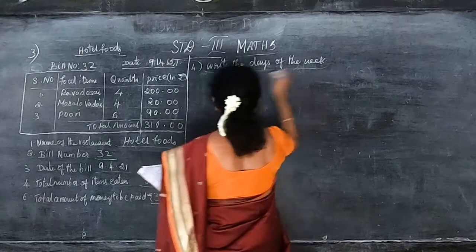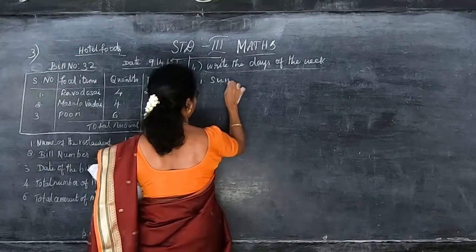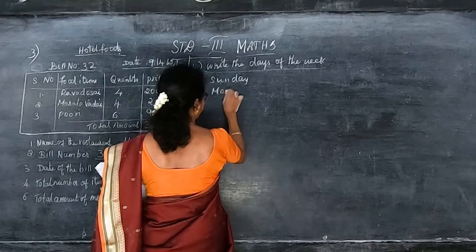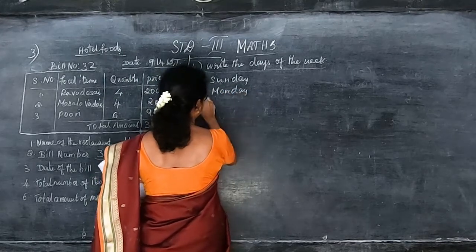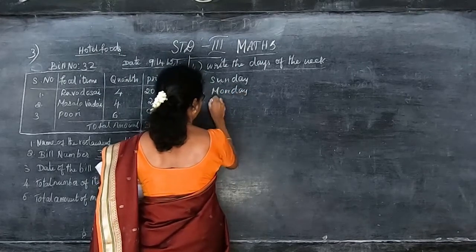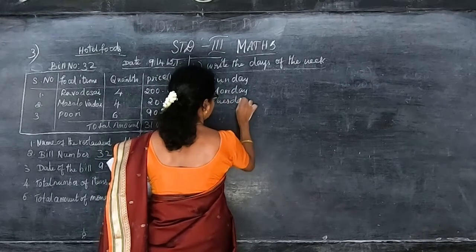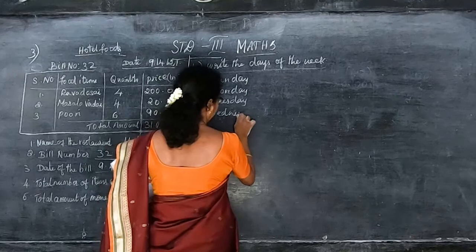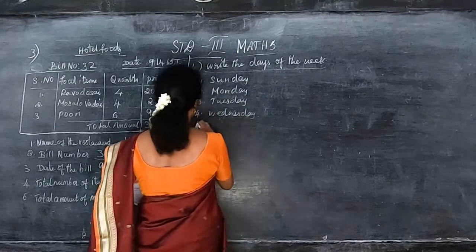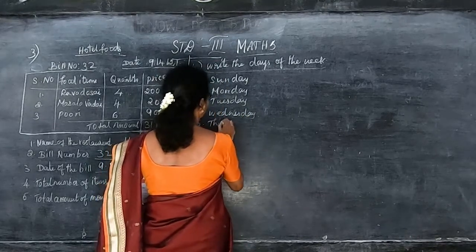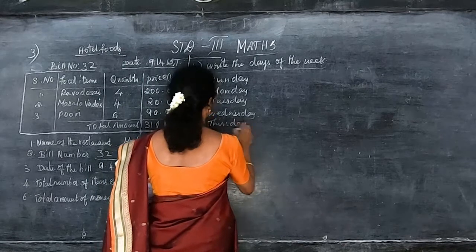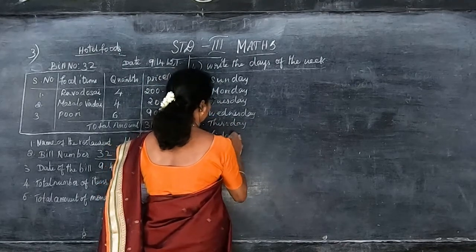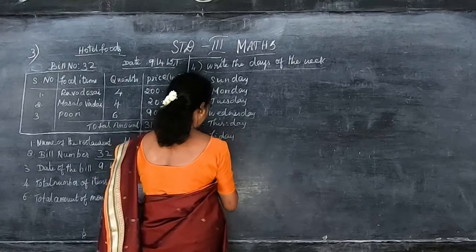Write the days of the week: Sunday, Monday, Tuesday, Wednesday, Thursday, Friday, Saturday. Write all the spellings correctly.